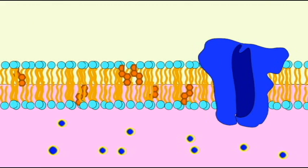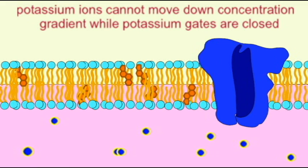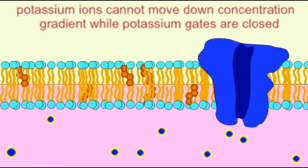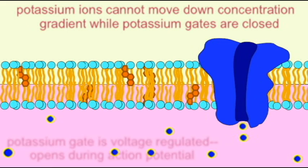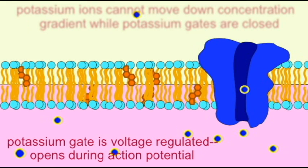During an action potential, however, these gates open, and therefore the potassium ions are free to flow from their area of high concentration inside the cells to the area of lower concentration outside the cells.